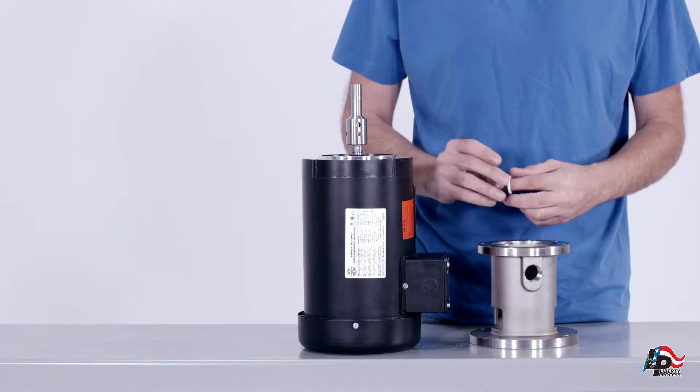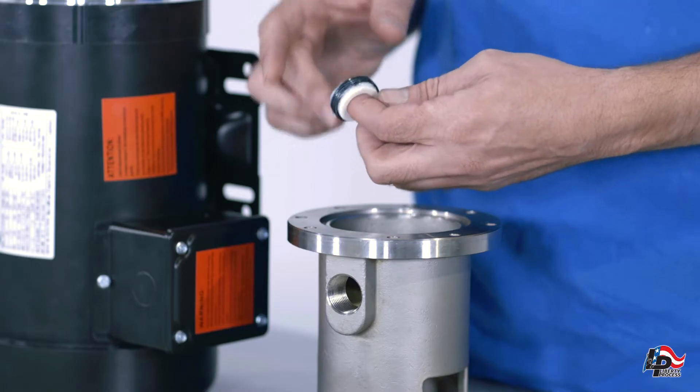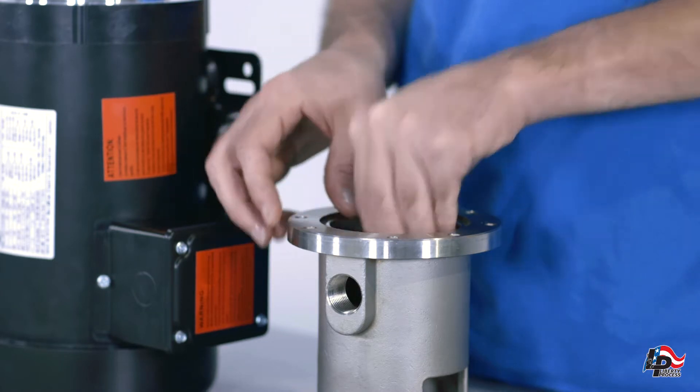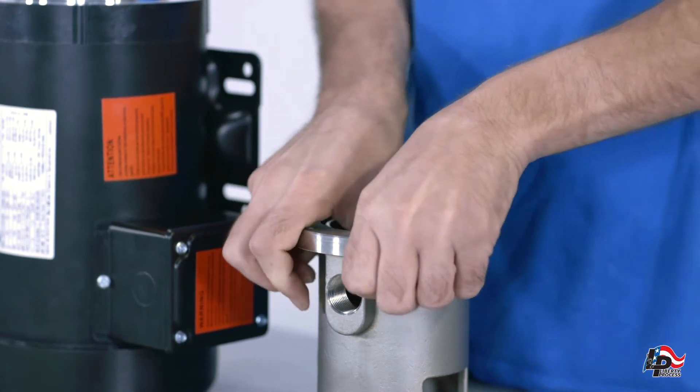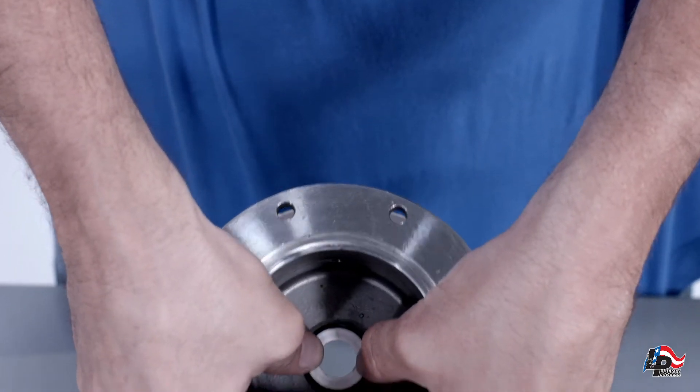Lubricate the outer diameter of the seal stationary face with liquid soap. Using your thumbs, gently press the stationary face of the mechanical seal assembly into the discharge casing until it seats.